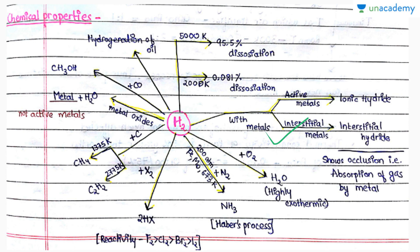These interstitial hydrides show the property of occlusion, that is, occlusion is the absorption of gas by metal. This water formation reaction is very exothermic—a huge amount of heat is produced. When hydrogen gas reacts with nitrogen gas, we get ammonia and this process is known as Haber's process. We will be dealing with it in great detail once we start with p-block elements.